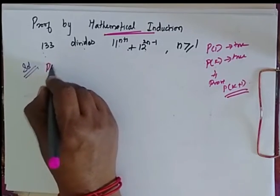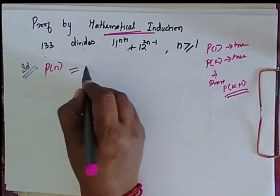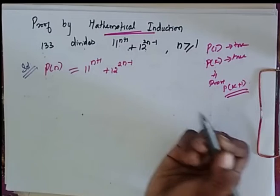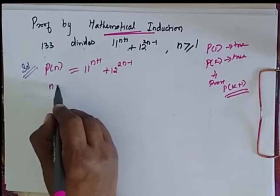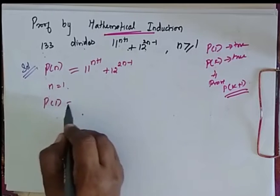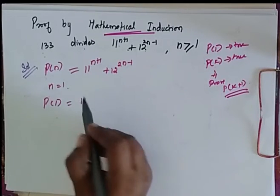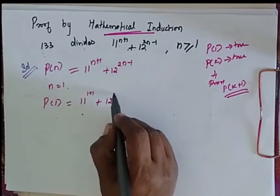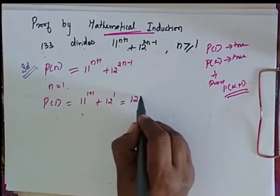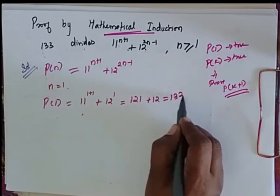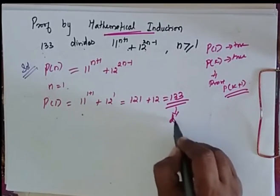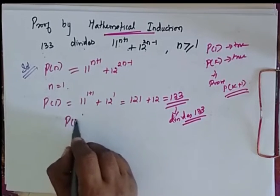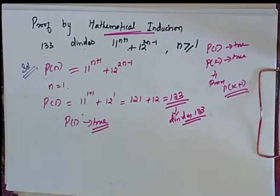Let P(n) be the statement that 11^(n+1) + 12^(2n-1) is divisible by 133. For n = 1, P(1) = 11^(1+1) + 12^(2×1-1) = 11^2 + 12^1 = 121 + 12 = 133. Since 133 divides 133, P(1) is true.